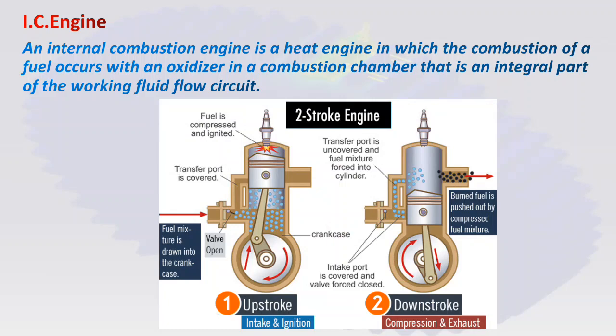Now see a two-stroke engine in this picture. The name of the two strokes are up stroke and down stroke. During the up stroke, when the piston moves from bottom dead center to top dead center, intake and ignition take place simultaneously. Fuel mixture is drawn into the crank through the valve. Here the transfer port is covered by the piston, so the piston compresses the fuel which came before into the combustion chamber. During the down stroke, the transfer port and exhaust port are uncovered and the fuel mixture is forced into the combustion chamber. This compresses the fuel mixture and pushes out the burned fuel gases from the combustion chamber.